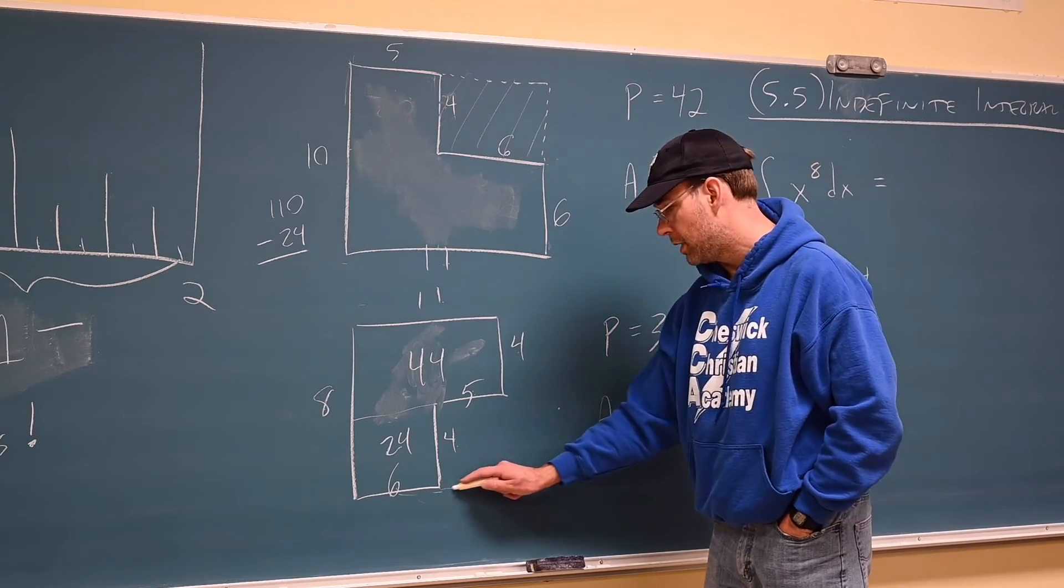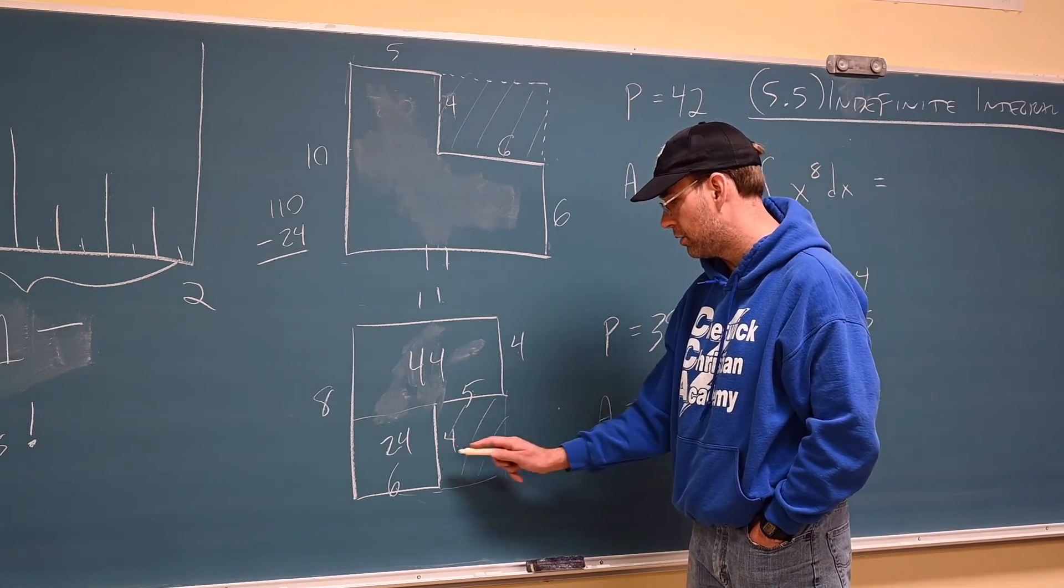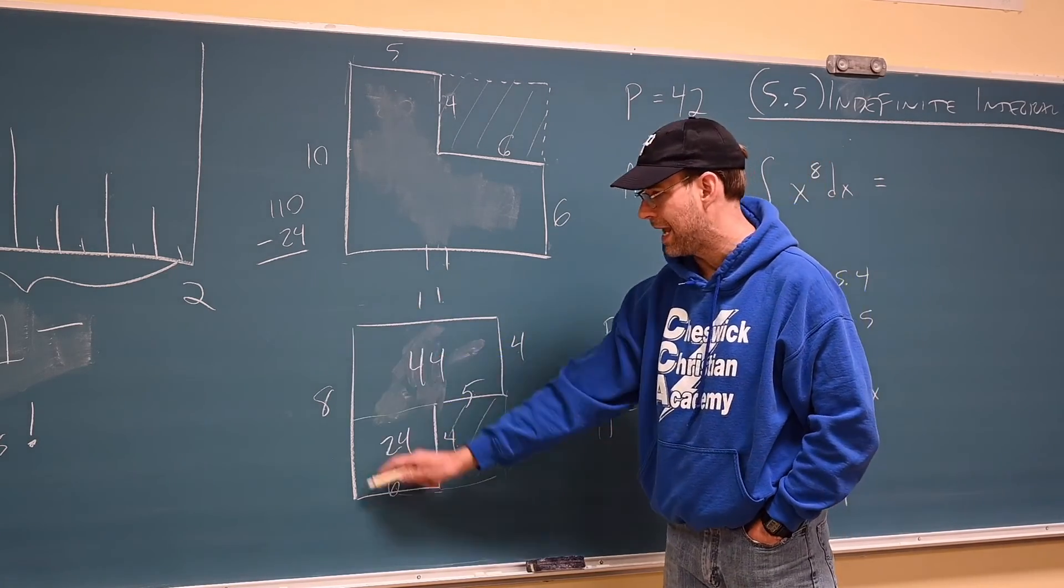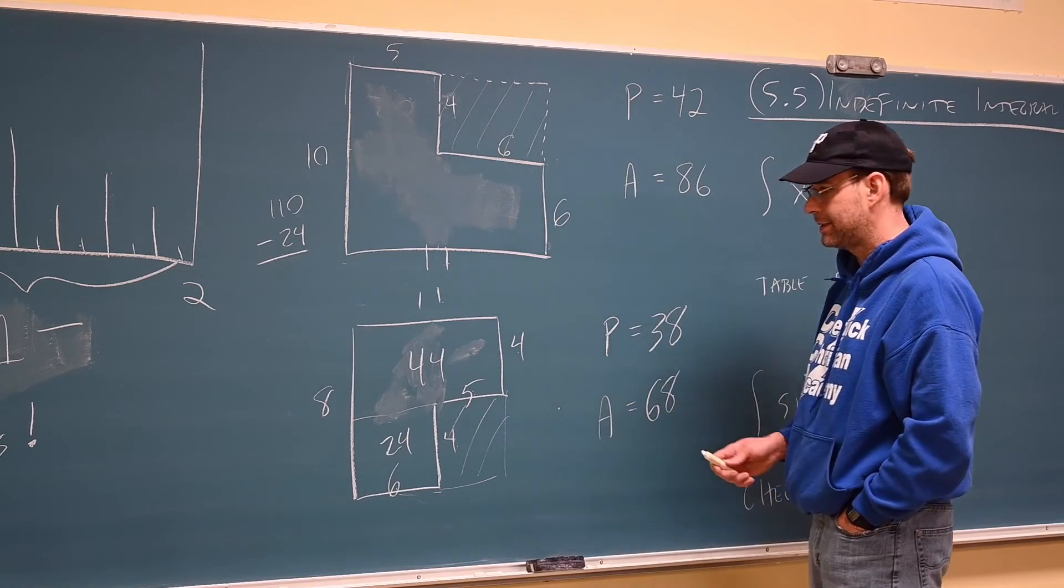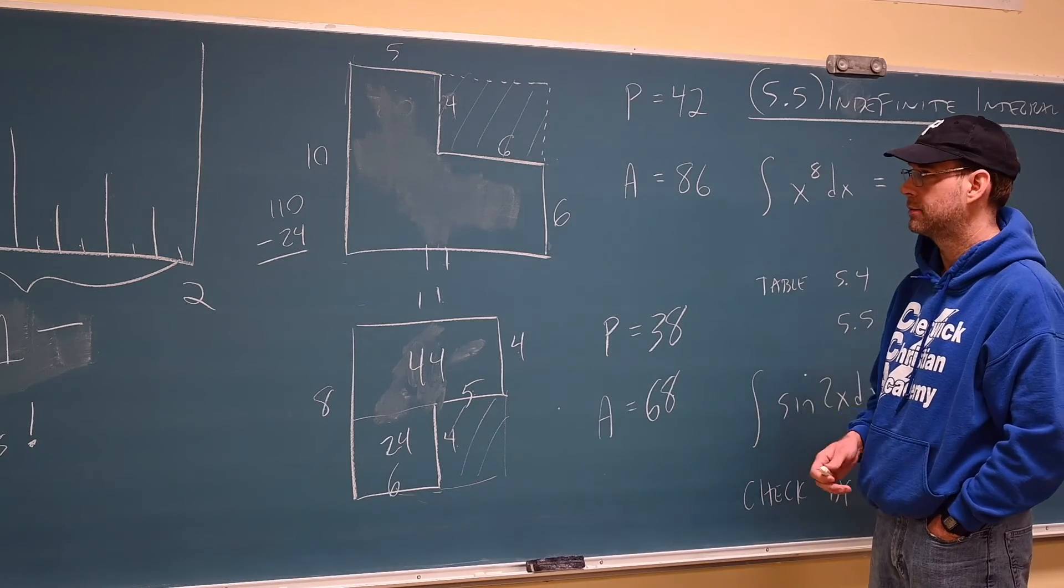If you did the room addition thing, and included that part, you'd end up doing 88 for the whole thing, minus 20 for the corner, it's still 68. And that's what we have going on.